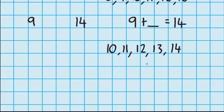So that's 1, 2, 3, 4, 5 numbers. So 9 plus 5 equals 14.